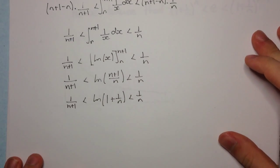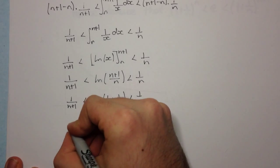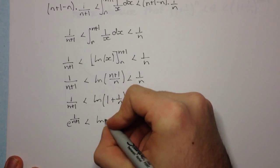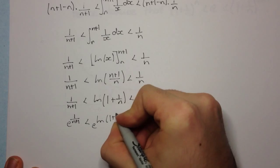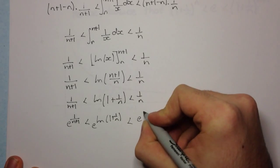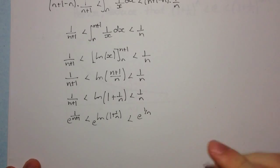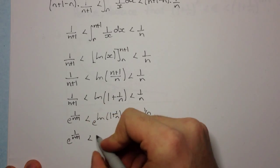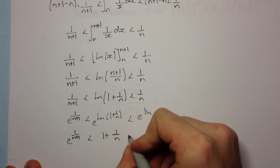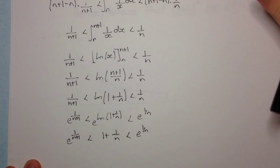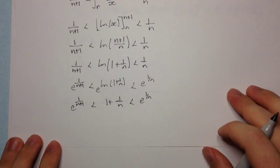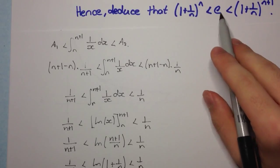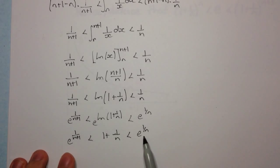Now we can exponentiate both sides. We get e^(1/(n+1)) is less than the exponential of log(1 + 1/n), which is less than e^(1/n). Since exponential and log are inverse functions they cancel each other out, and we're left with: e^(1/(n+1)) < 1 + 1/n < e^(1/n).